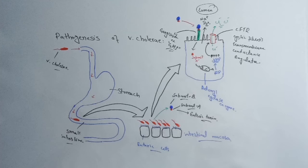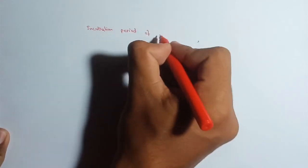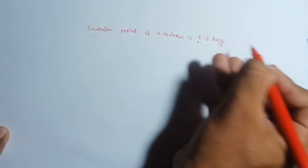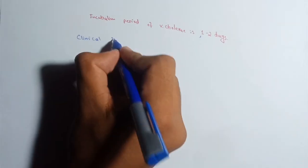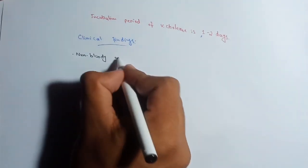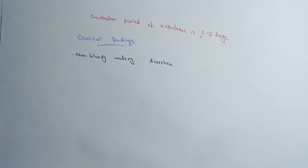The incubation period of Vibrio cholerae is one to two days. It means the signs and symptoms of cholera start to appear within one to two days after the entering of Vibrio cholerae inside the body. Here we have some clinical findings of cholera. In cholera there will be non-bloody watery diarrhea, meaning there will be no blood in the feces but the diarrhea will be very watery.